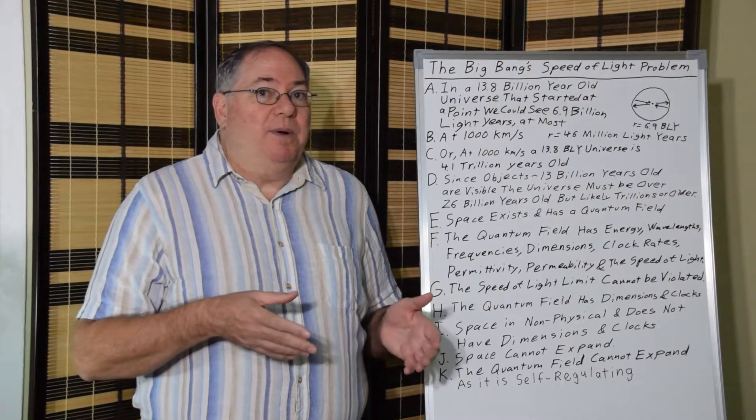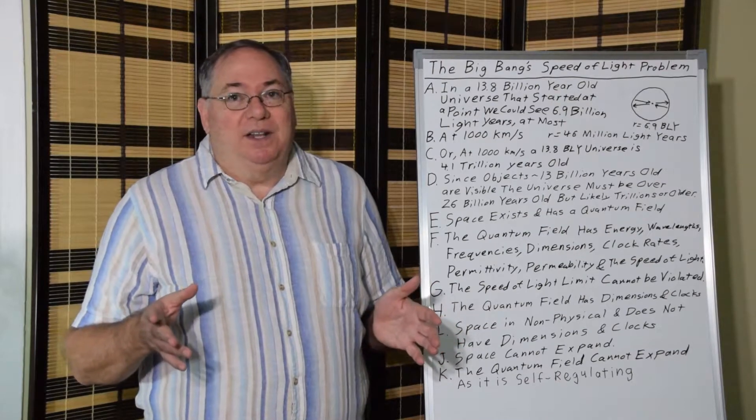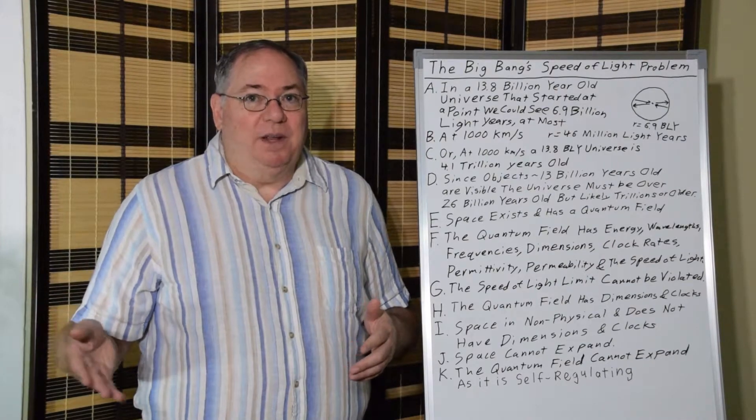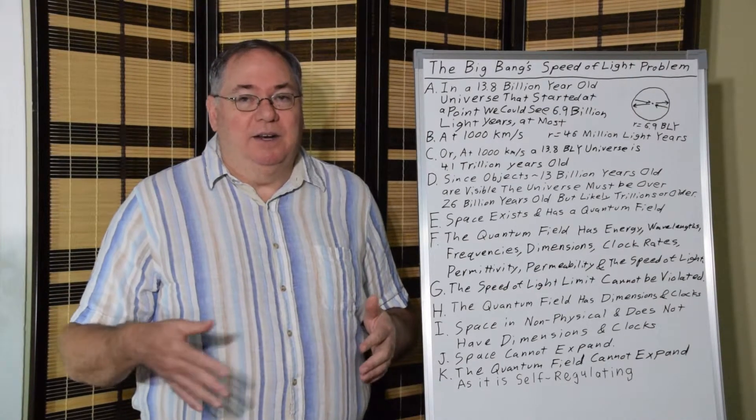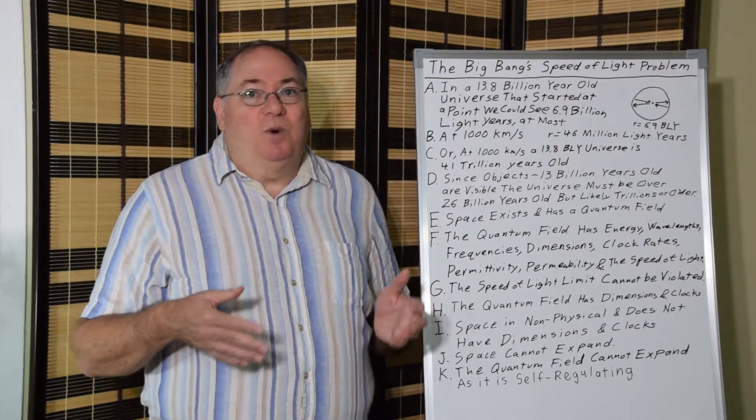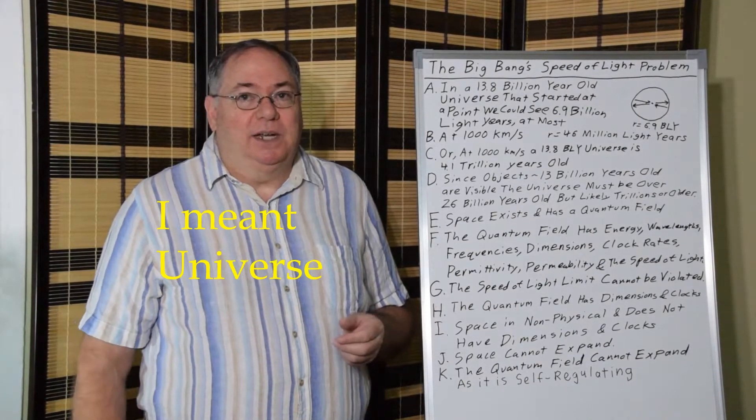And then we have the problem if everything could only travel 1,000 kilometers per second. And once again, according to the Hubble constant, it started traveling much faster than that, that are far away from us. Then it would take 4 trillion years for our galaxy to form at 1,000 kilometers per second.